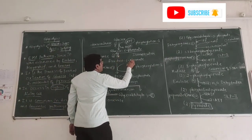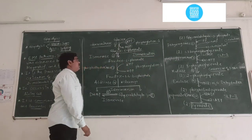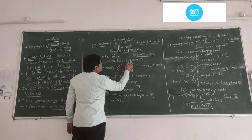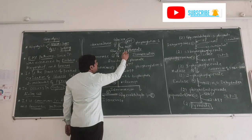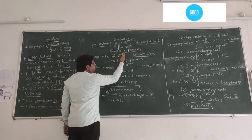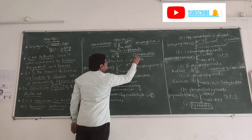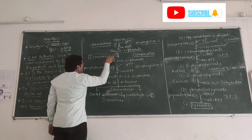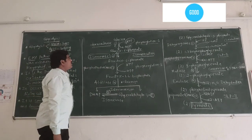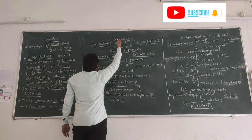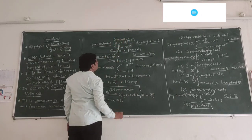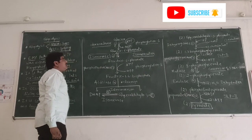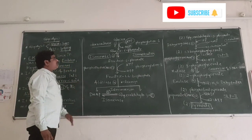The second reaction is isomerization. Here, glucose-6-phosphate is converted into fructose-6-phosphate. These two are isomers. The main purpose of glycolysis is that the 6-carbon compound glucose is converted into the 3-carbon compound pyruvic acid — that is the breakdown of glucose molecules. This reaction is catalyzed by the isomerase enzyme.